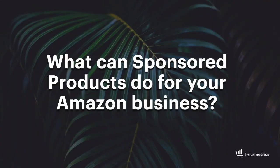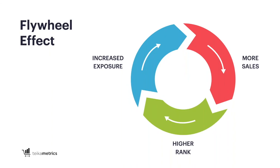What can sponsored products do for your Amazon business? The flywheel effect is what every business is looking for on Amazon. Sponsored products help kick off increased exposure. With more exposure, you get more sales, and with those more sales, you get higher organic sales rank. It's really a virtuous cycle of getting more eyeballs on your products, more conversions, and having those sales help your overall business and get your organic listings more visibility as well.